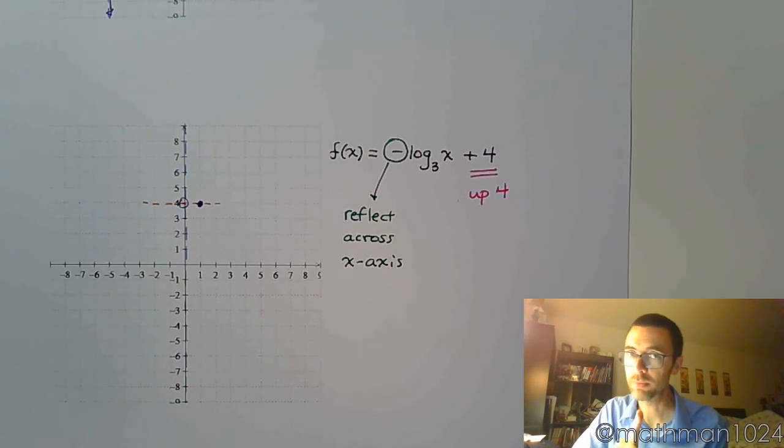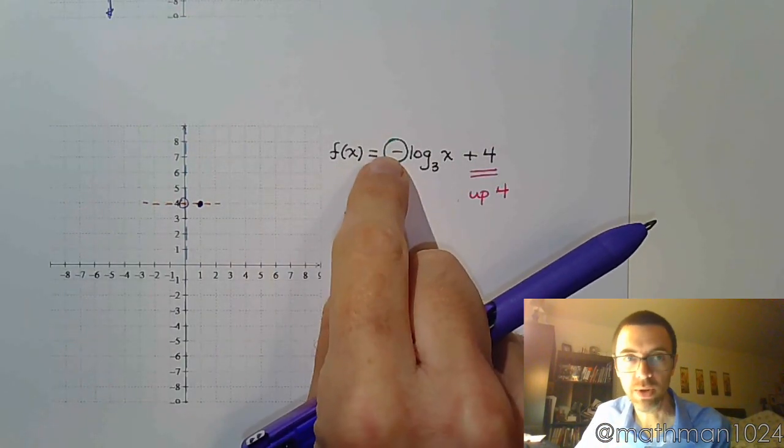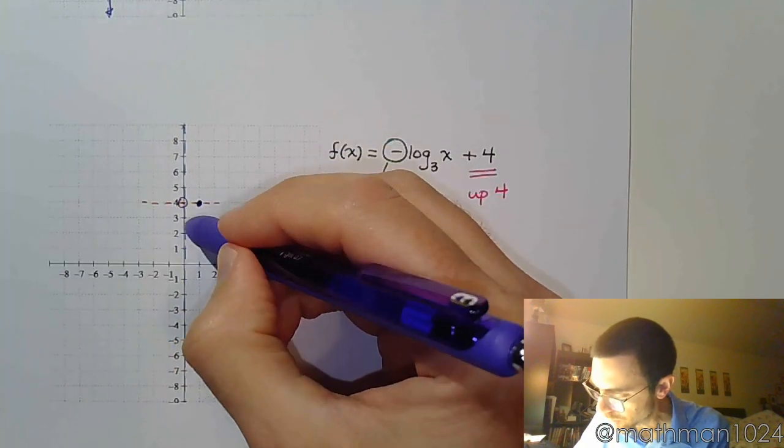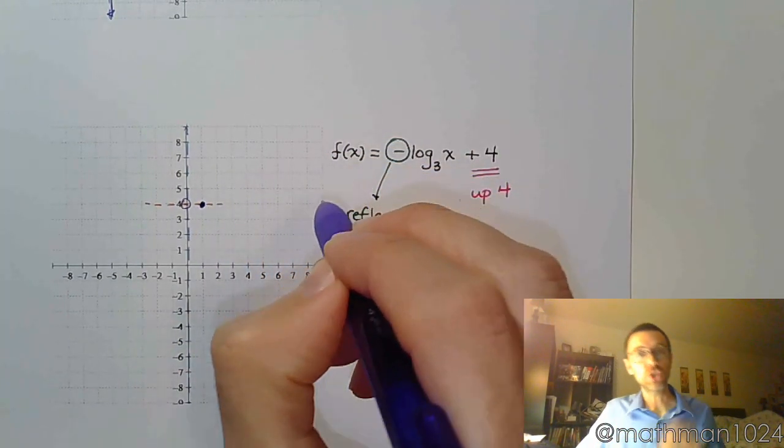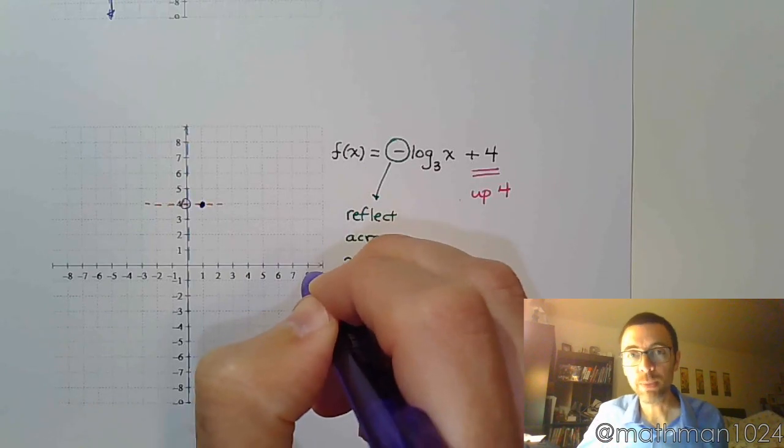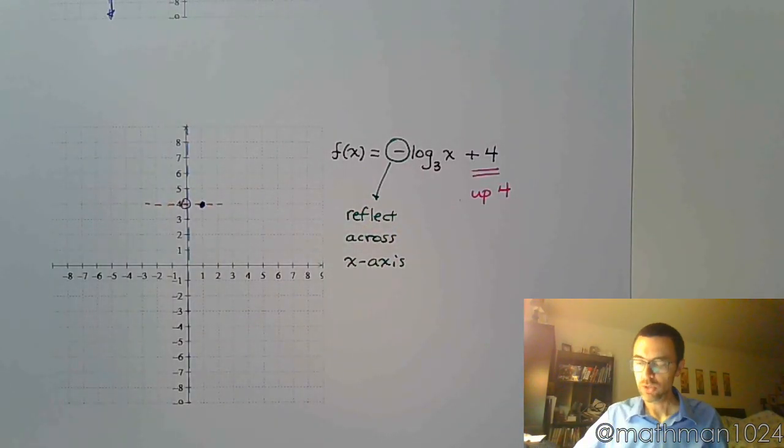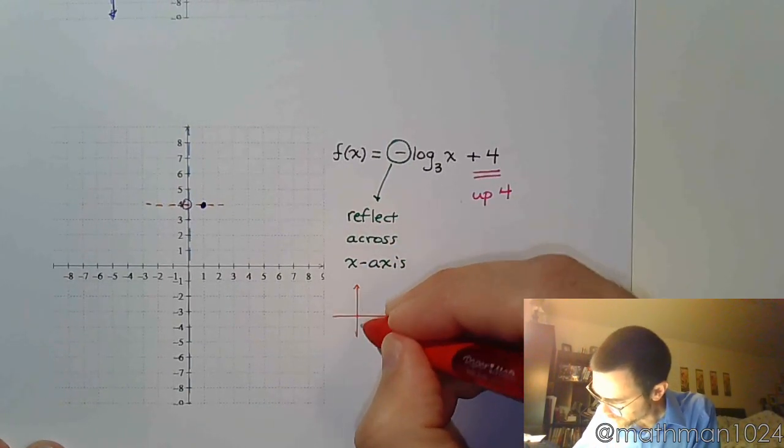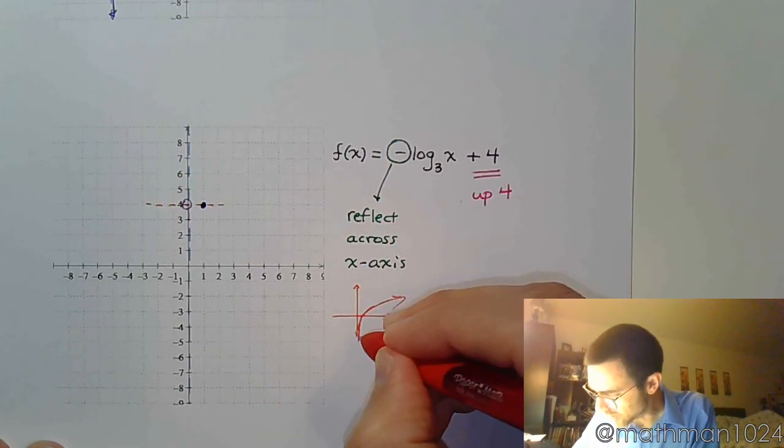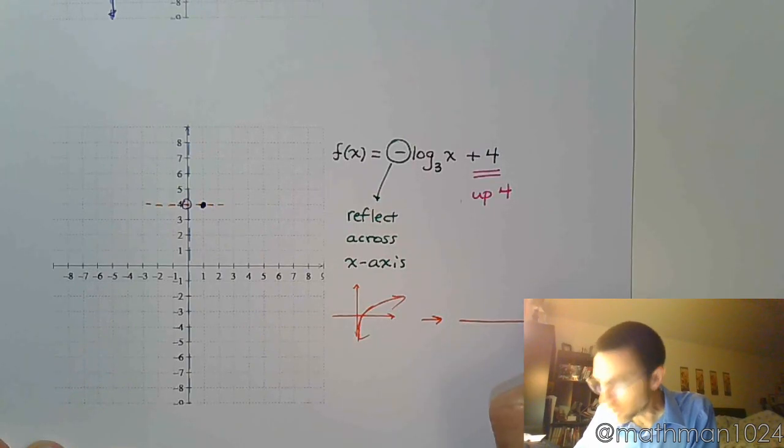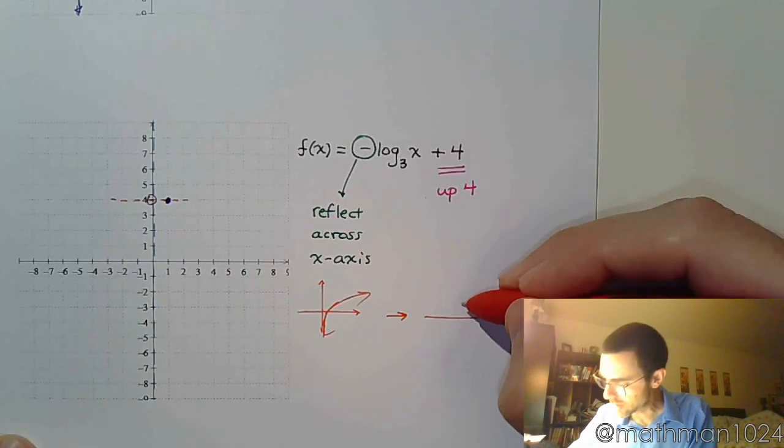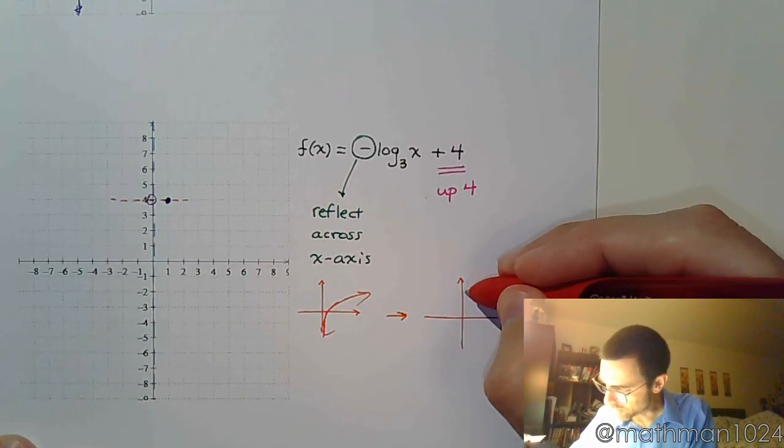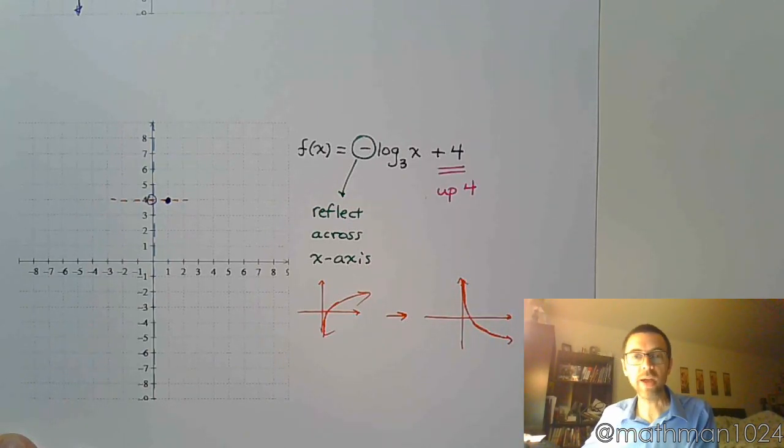Now here's what should have happened. Without the negative here, your graph should be going up and turning out to the right. That's what should have happened. But with a negative, that means it's going to flip upside down. So you're going to go from a graph that looks like this to a graph that looks like that.